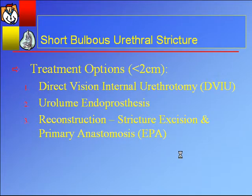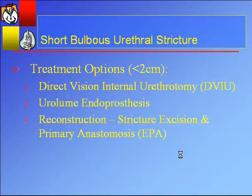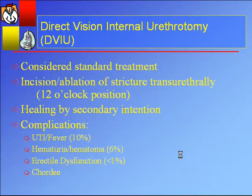In terms of treating this relatively short-segment urethral stricture, there are several options. The standard treatment most people would consider is a direct vision internal urethrotomy, or DVIU. Some would consider the Urolume endoprosthesis, and others would consider reconstruction by stricture excision and primary anastomosis. A DVIU is obviously the first treatment option and has been considered the standard treatment since about the mid-1970s. That's when the impetus for urethral reconstruction dropped off dramatically. Twenty years later, we're realizing what the long-term results are, so some thoughts have changed.